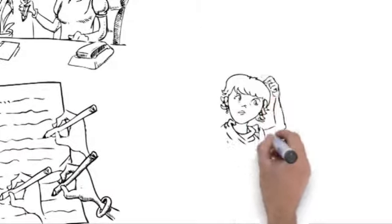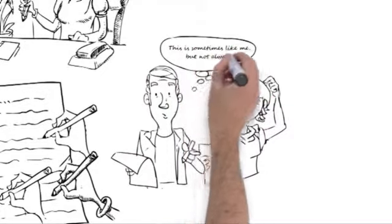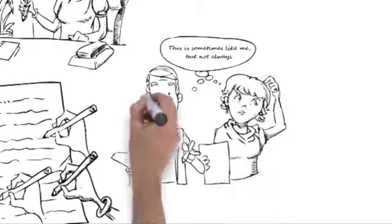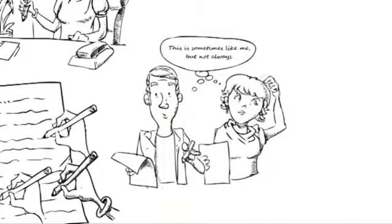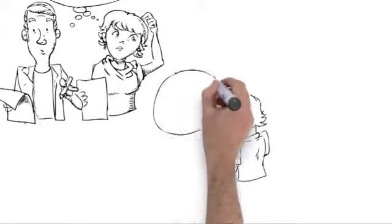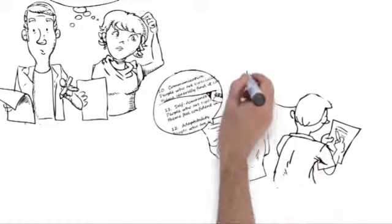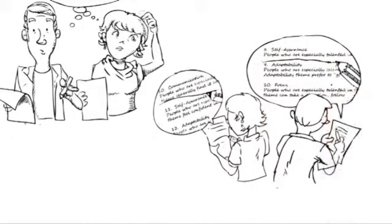When you come to a description and find yourself scratching your head, you've probably hit one that only sometimes shows up in your daily life. Take that pen and draw a line immediately above that theme description. That line separates your dominant themes from your supporting themes. Most people draw that line after their 10th or 12th theme description, but everyone's unique.